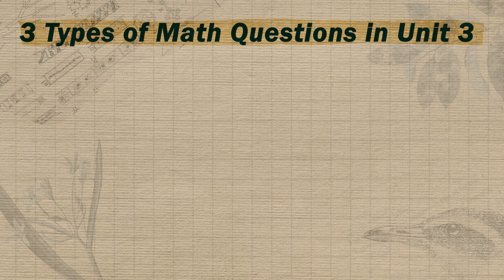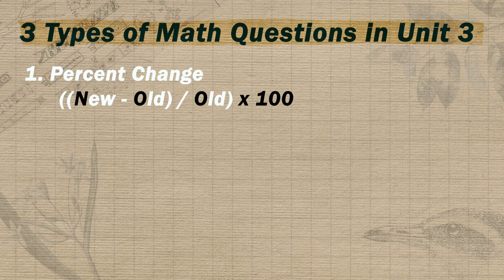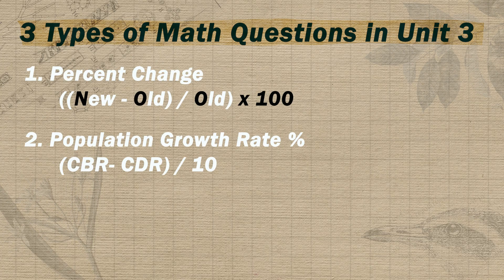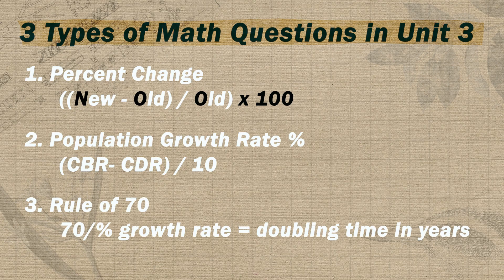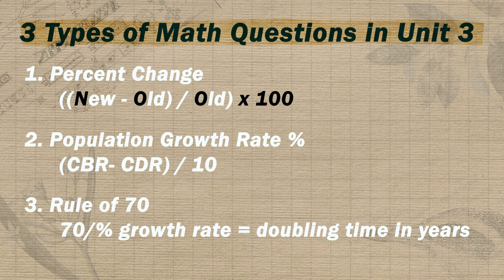Let's recap today's video. The three types of math problems you need to be able to do in unit three are: calculating percent change, which you can remember with the mnemonic NOO times 100; calculating a percent growth rate for populations using crude birth rate and crude death rate; and finding the doubling time for a population using the percent growth rate and the rule of 70. I hope this video is helpful as you're getting ready for your unit three in-class test or the exam in May. Check out the unit three ultimate review packet video, or the playlist for deep dives into individual topics. Always remember to think like a mountain, write like a scholar, and don't plagiarize your math textbooks from Italian painters.